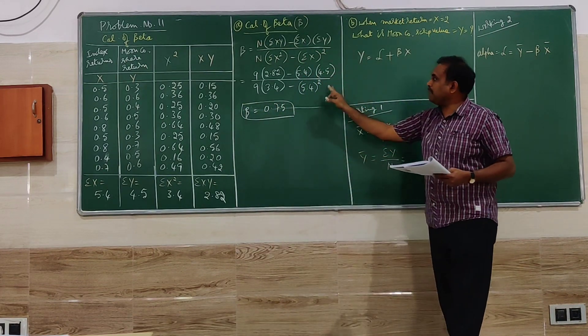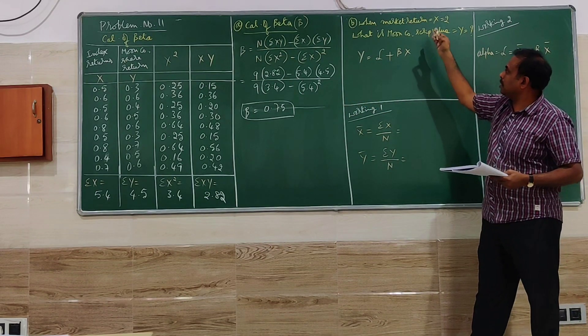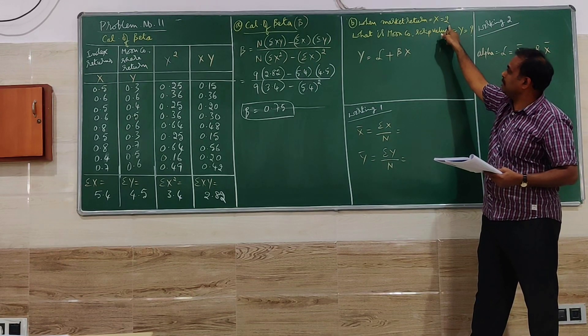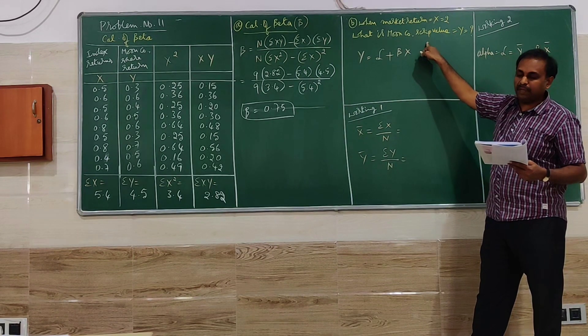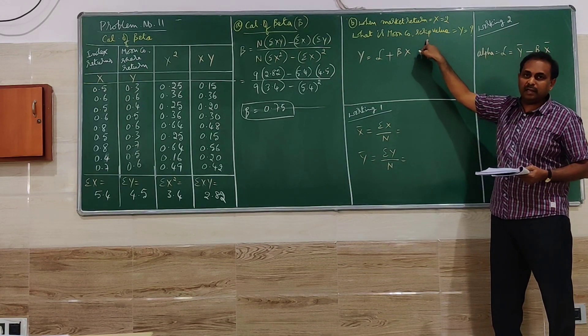Beta value is taken for calculation of the second question. What has been given? If the market return is 2, what is the moon company script value?